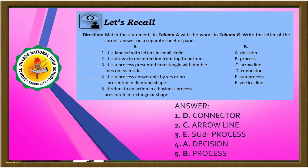Let's recall. Match the statement in Column A with the word in Column B. Write the letter of the correct answer on a separate sheet of paper. Number 1: It is labeled with a letter in a small circle. Yes, the correct answer is connector. Number 2: It is drawn in one direction from top to bottom. Yes, letter C — a line.